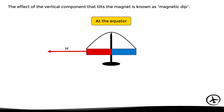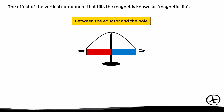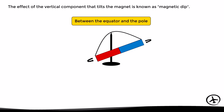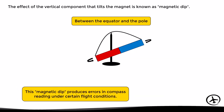This tilting of the compass is known as magnetic dip. It is not present at the equator since the force there is completely horizontal, so the compass indication does not experience magnetic dip errors. At any point between the equator and one of the poles, the magnet will tilt due to the vertical component of the magnetic field. Although the compass can still rotate horizontally, this tilting will produce errors in the compass indication under certain flight conditions such as accelerations or turns.